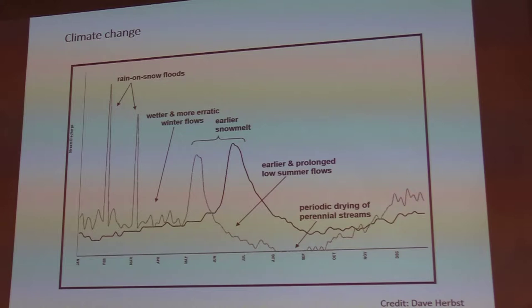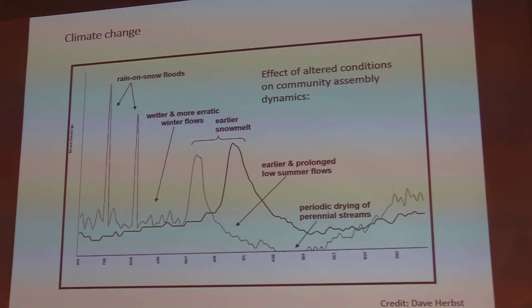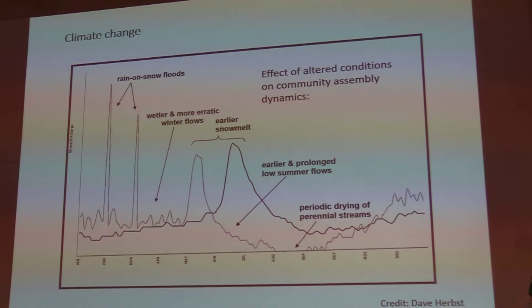These kinds of shifts have implications for community assembly and food web dynamics in our aquatic systems. In particular, when you have a drying stream you have altered temperature cycles, dissolved oxygen cycles, and cuts in dispersal ability. These drying events lead to habitat constriction, creating both niche-based and dispersal-based disturbances — and that's the framework I want to use for this talk.